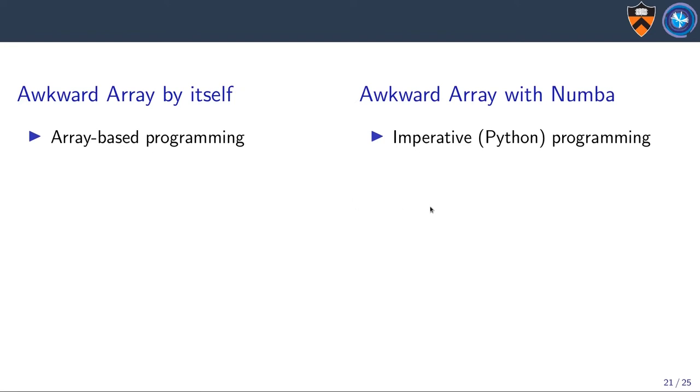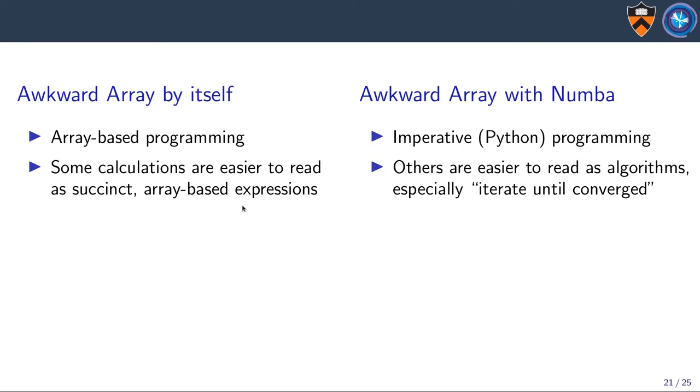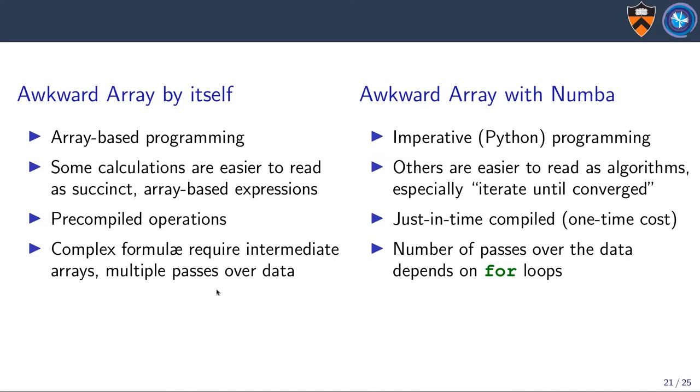This particular example implements the bike route length calculation from the live demo. The Numba-compiled version is some 50 times faster than the version that used only awkward arrays, and 250 times faster than the pure Python version. And this looks just like the pure Python version, because that's what Numba does, it compiles Python. Since it makes a single pass over the data and there aren't any intermediate arrays, this is probably about as fast as this particular problem can be solved. Contrasting the benefits of awkward array by itself and with Numba: awkward array by itself is array-based programming, familiar to NumPy and Pandas users, whereas Numba is imperative, more familiar to programmers. Some calculations can be easier to read as array-based expressions, and others are easier to read as algorithms. Awkward array is all pre-compiled operations, whereas Numba just-in-time compiles things. Complex formulas require intermediate arrays, multiple passes over the data. Whereas Numba, the number of passes depends on the number of for loops.